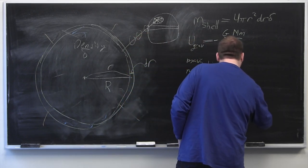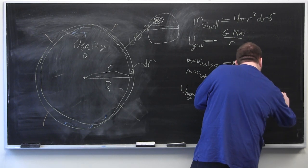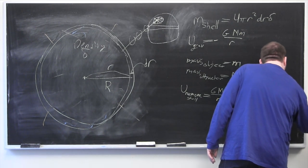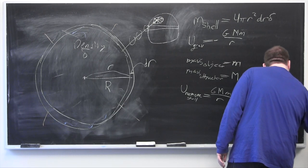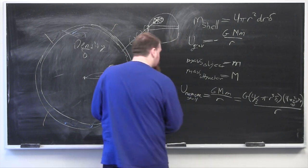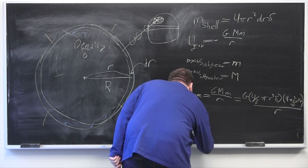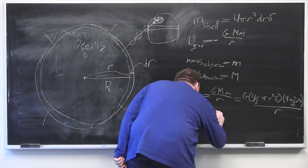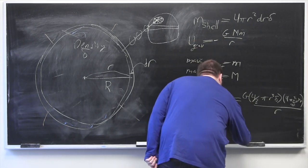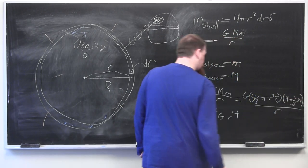So this is going to be equal to g times 4 thirds pi r cubed delta times 4 pi r squared dr delta, all over r. And so we get that this will be equal to 16 thirds pi squared delta squared g times r to the fourth dr.